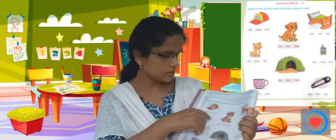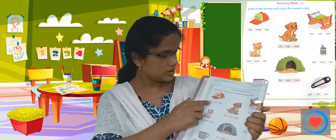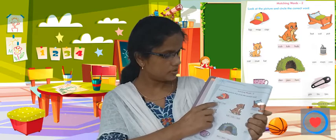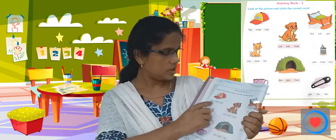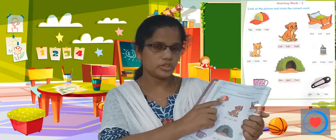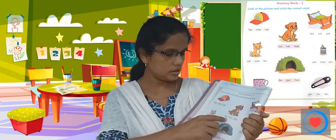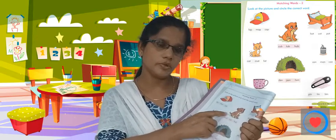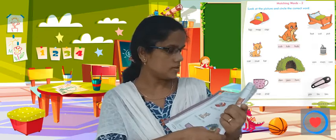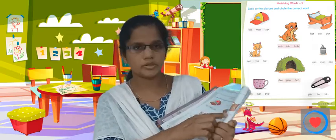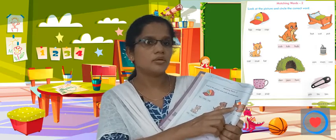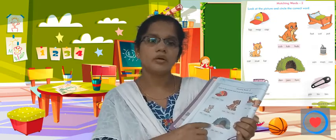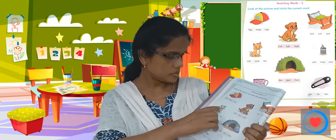Okay, what do we do here? Look at which picture — cap. Okay, cap. Now here are three words: lab, map, cap. Now what is this? This is not pot — this is cap. Okay, what do we do here? Also read the picture name.